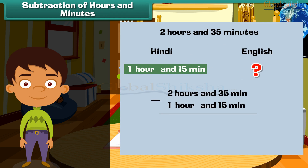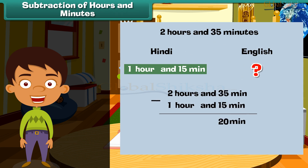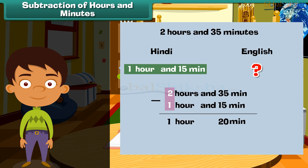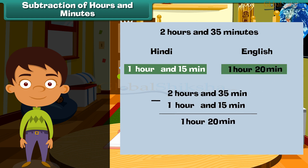First, subtract the minutes: 35 minus 15 is 20 minutes. Now subtract the hours: 2 minus 1 is 1 hour. So Latika took 1 hour and 20 minutes to complete her English homework.